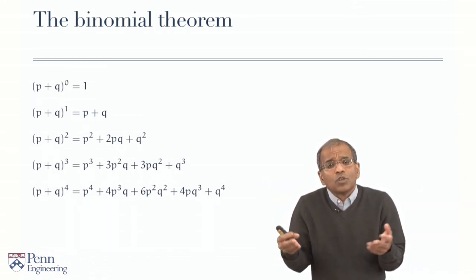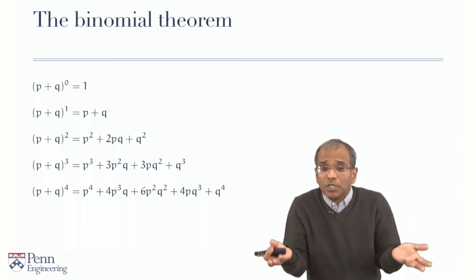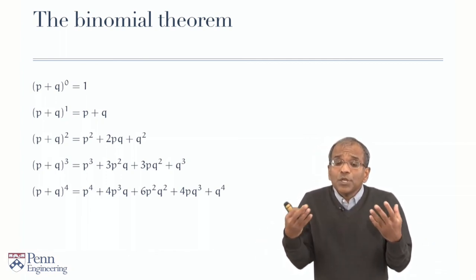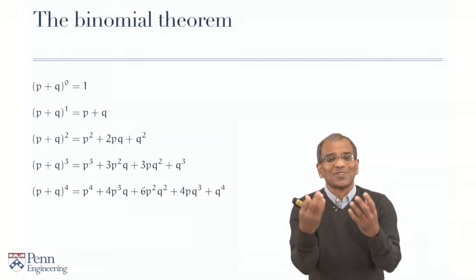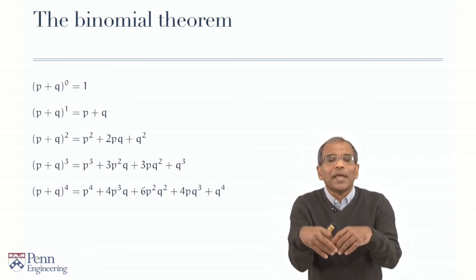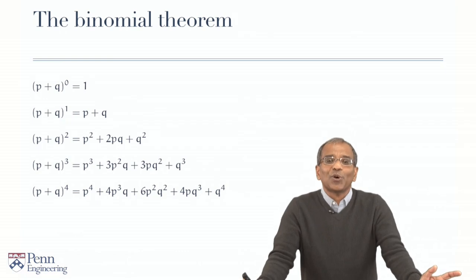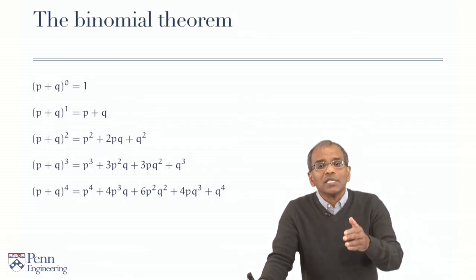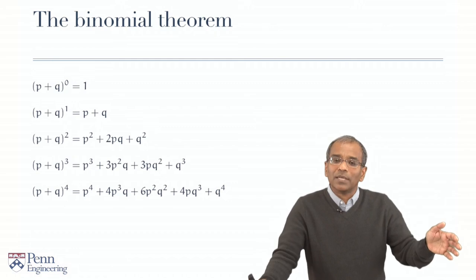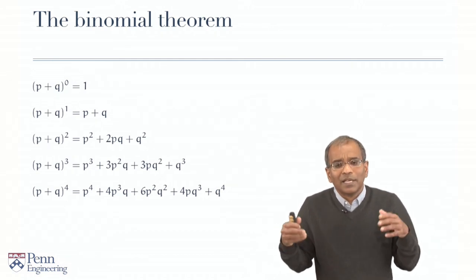p plus q to the power 1, of course, is just p plus q. p plus q to the power 2 is the first non-trivial case, and this is the first major algebraic identity you saw in elementary school. p plus q squared is p squared plus 2pq plus q squared. Very familiar, very comforting.